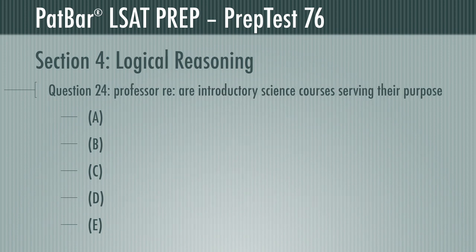Question 24 presents a professor arguing that introductory science courses for undergraduate students are intended to be difficult to weed out those students who are not serious. Except some of the least enthusiastic students pass anyway, and so therefore these classes are not serving their purpose.